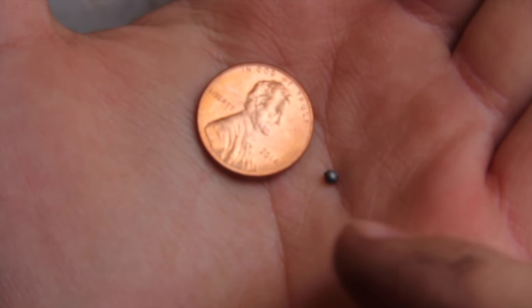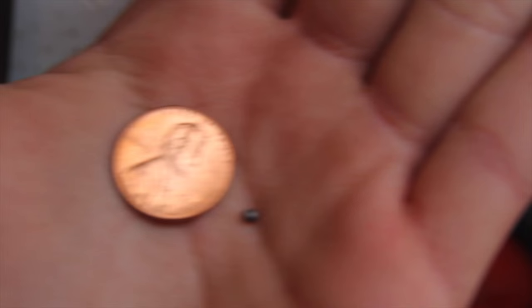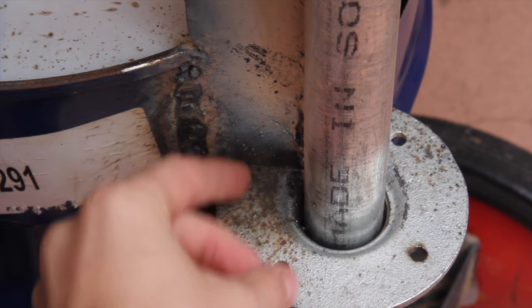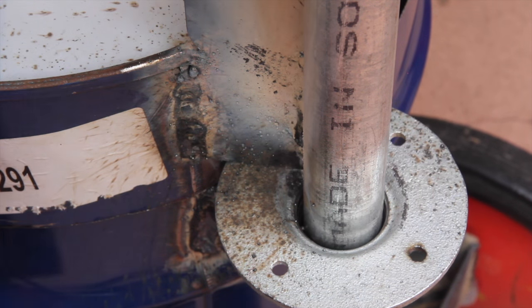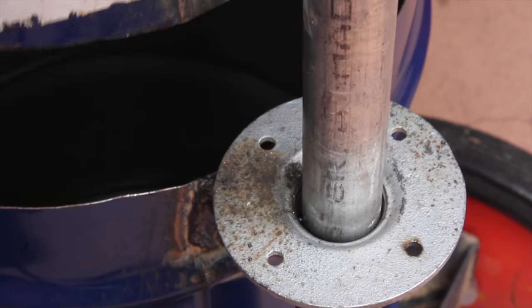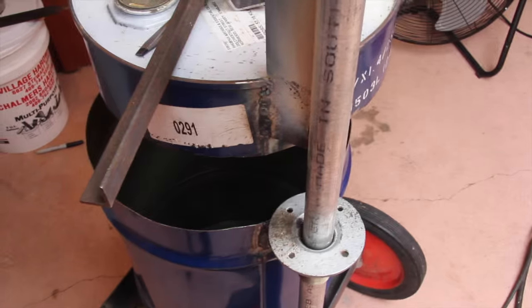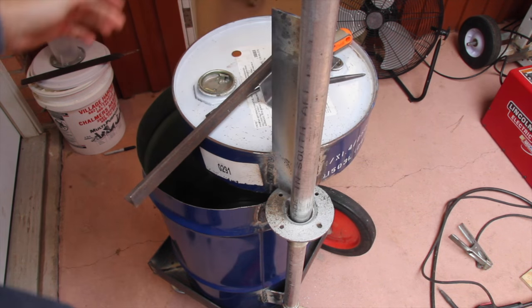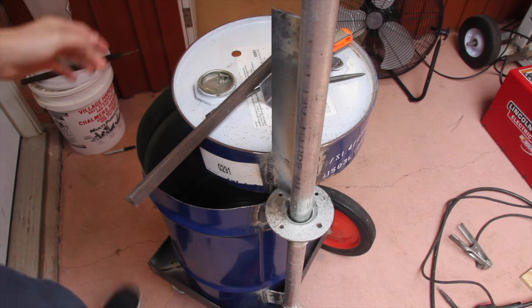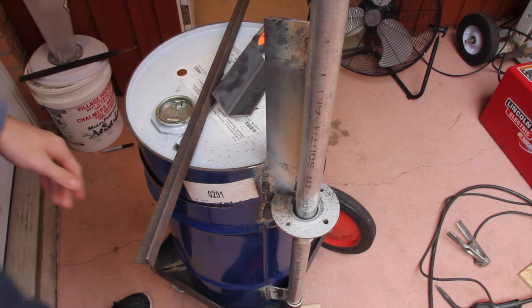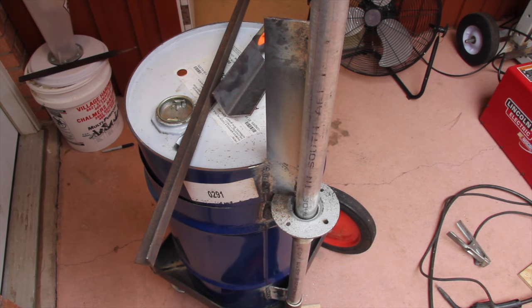See this tiny little bead of weld right there? I'm going to show you what it can do. So I just take that little ball and I put it right in there, it's in the flange right there. Look at that, the entire lid system, it's blocked it.